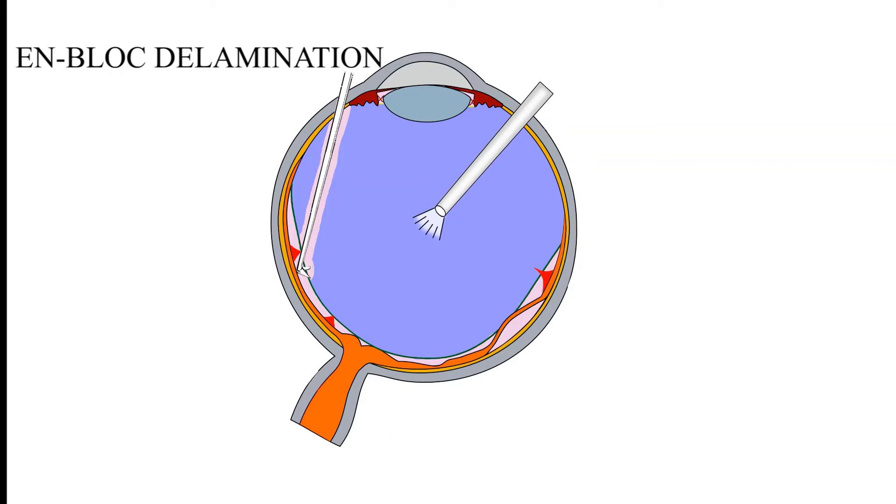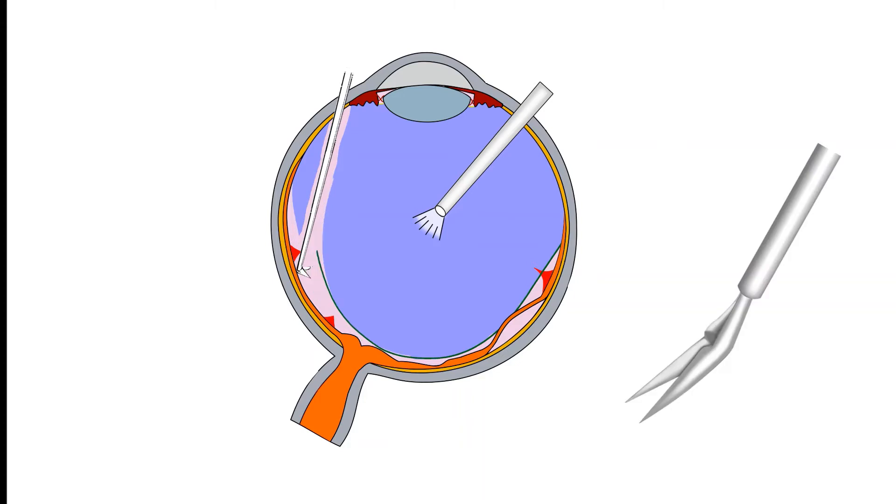In en-block delamination, the posterior hyaloid is kept partially intact in order to use the continuing anteroposterior traction to elevate the epiretinal membranes during dissection. A small window in the partially detached posterior hyaloid is made so that a horizontally cutting scissors can be introduced into the retrohyaloid space. This enables us to completely remove all the fibrovascular tissue from the retinal surface.